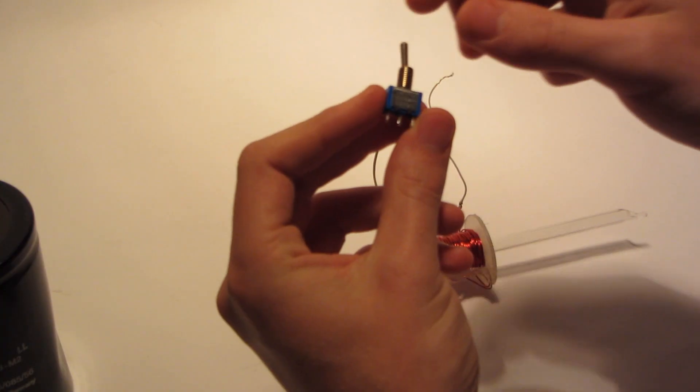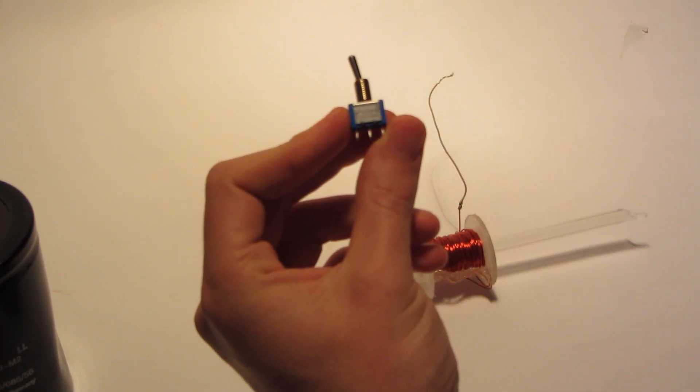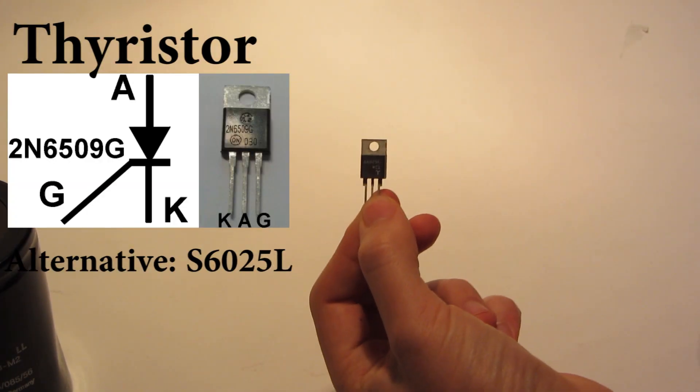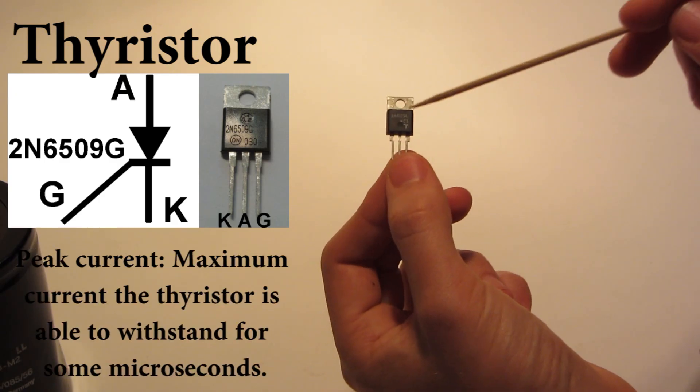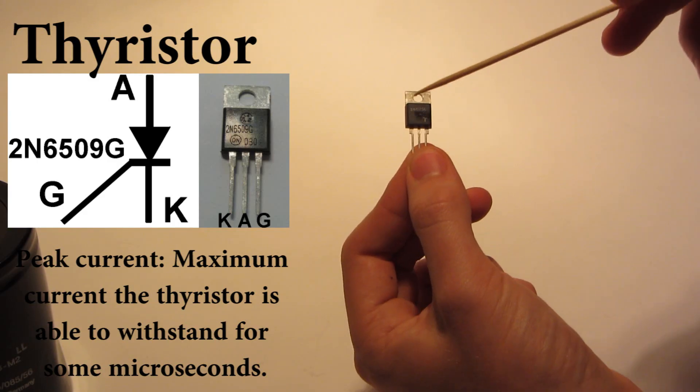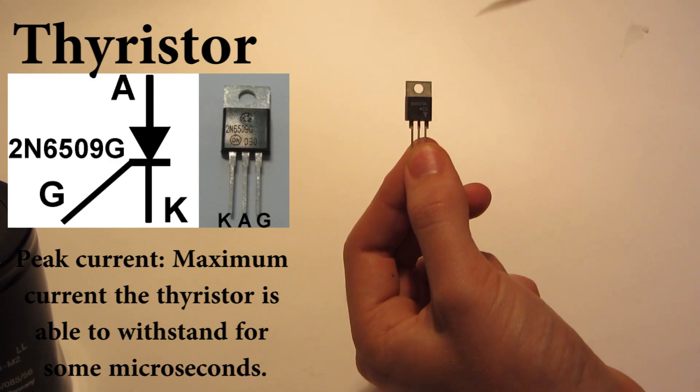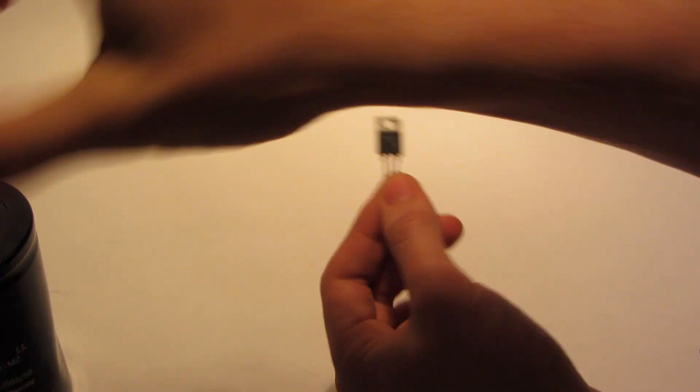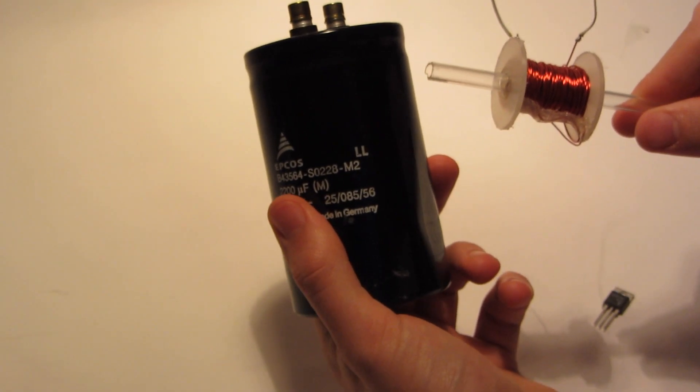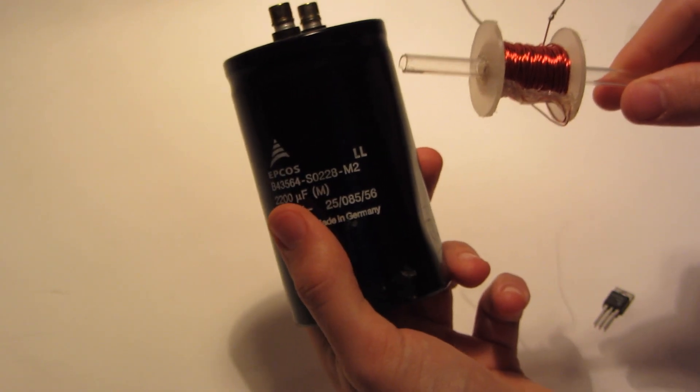So what I use is thyristors. They are like switches but they have a high peak current of, for example, up to 1200 amperes. So this little thing here can direct all our energy from the capacitor to the coil without burning through wires or destroying our switches.